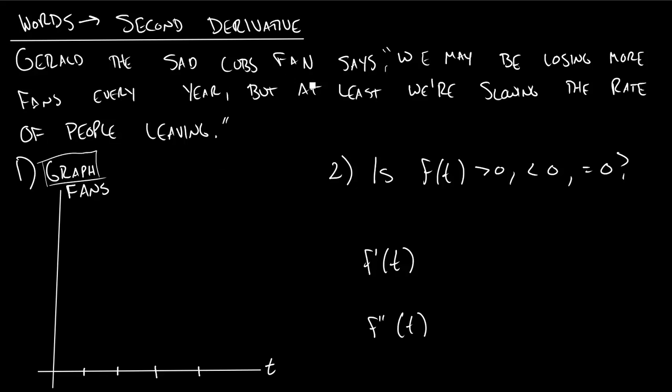Gerald doesn't realize it, but he's talking about the second derivative when he talks about this. So what does he really mean? To kind of just start us off, let's maybe just start with the graph of f of x, so just the graph of fans.